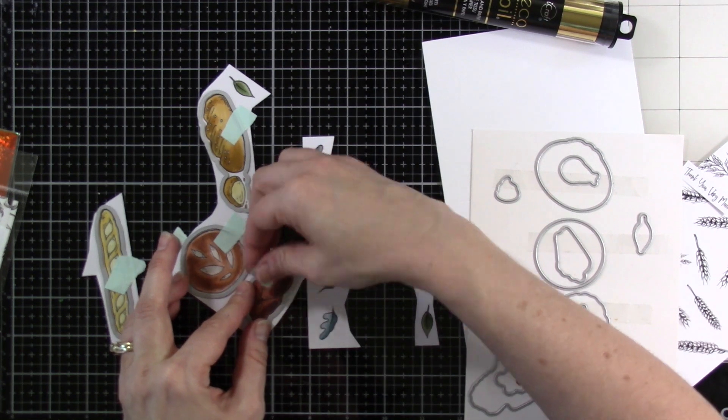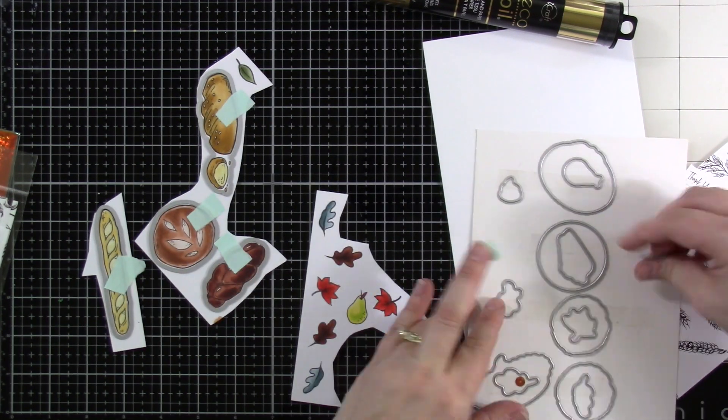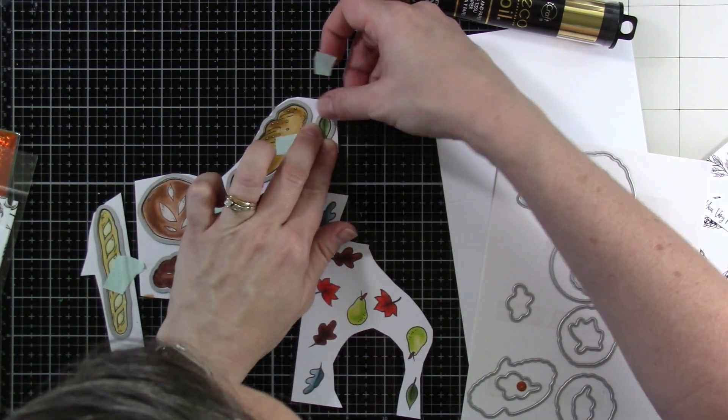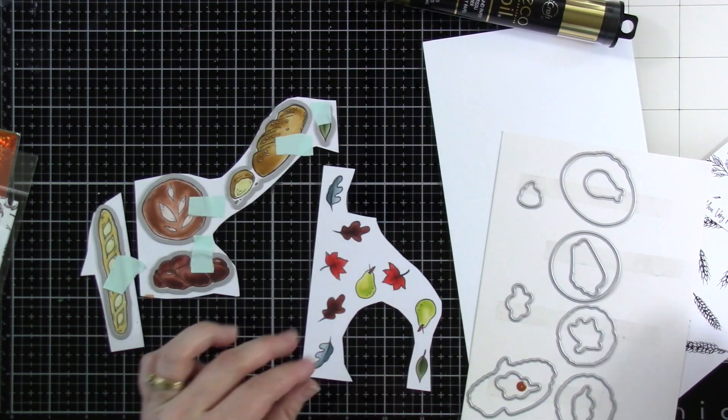But this inspiration kit is all about baking. So as you can see we've got bread, we've got some leaves, it's ready for fall. There are pie images in this stamp set.